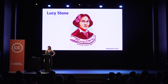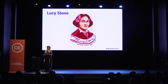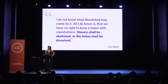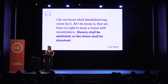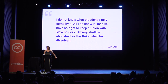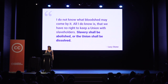Lucy Stone, on the other hand, sought out allies and established her own association with membership that included Black men and women. Stone built community, forged alliances, shared tactics with other movements, and eventually those alliances — Black and white, women and men — helped the suffragists and their allies persuade several states to allow women the right to vote.